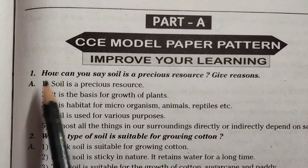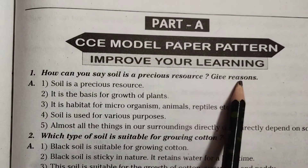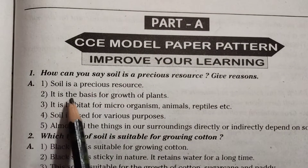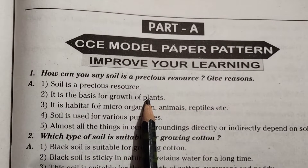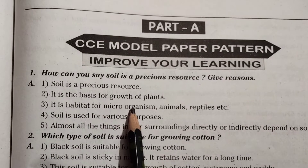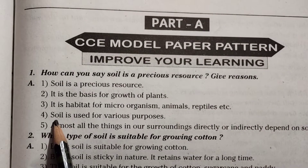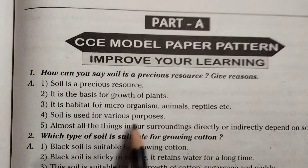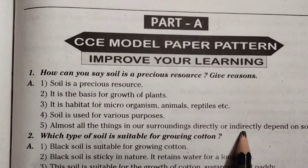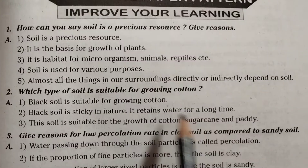Through your learning, first one: How can you say soil is a precious resource? Give reasons. Answer: Soil is a precious resource. It is the basis for growth of plants. It is inhabited by microorganisms, animals, reptiles, etc. Soil is used for various purposes. Almost all the things in our surroundings, directly or indirectly, depend on soil.